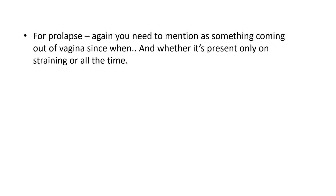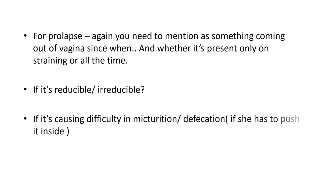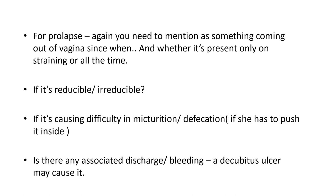For prolapse, you need to note something coming out of the vagina and since when — elderly patients often hide this complaint and may live with that prolapse for even a year, so you really have to get friendly and ask again and again. Ask whether it is present only on straining or all the time, if it is reducible — most cases are reducible, but in long-standing prolapse it can be irreducible. Ask if it causes difficulty in micturition or defecation, if she has to push it inside to pass urine or stool, and if there is any associated discharge or bleeding per vagina, as a decubitus ulcer may cause it.